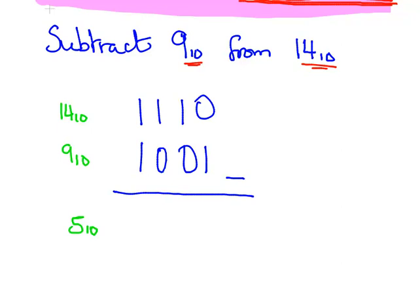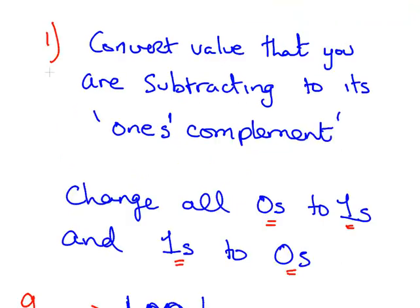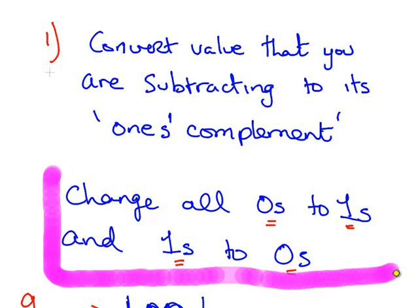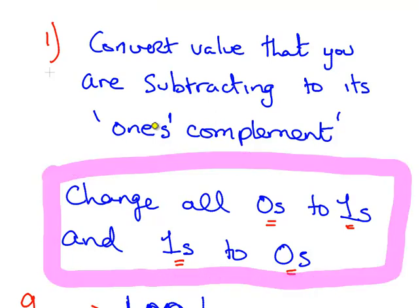So what we're going to do is work with 9. The first step is to convert the value that you're subtracting — that's 9 — to its 1's complement. Change all the 0's to 1's and all the 1's to 0's. That's a very important step — this is to compute the 1's complement.